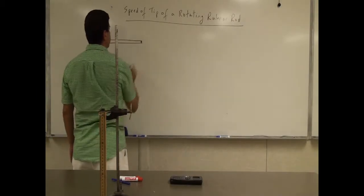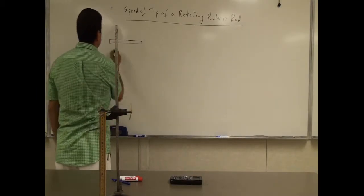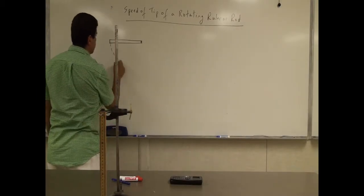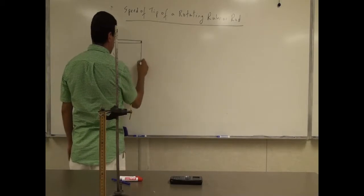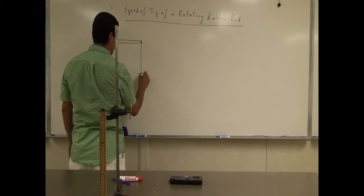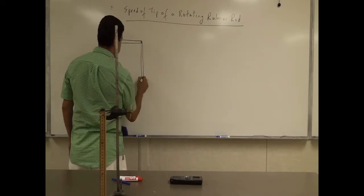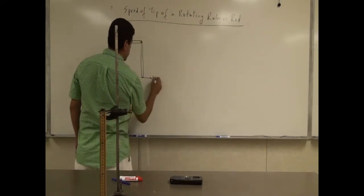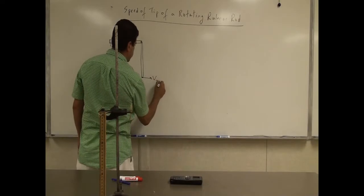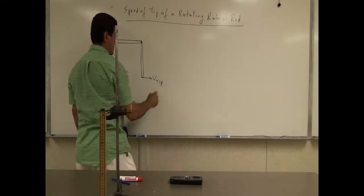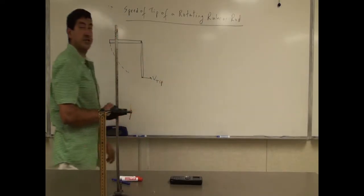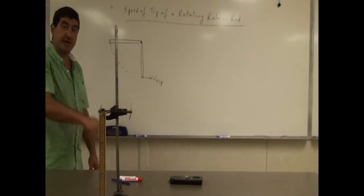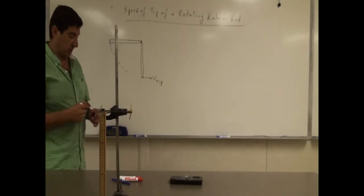It's pivoted about the end. I'm going to take this ruler and put it in its horizontal position. Then I'm going to ask: what is the speed — the tangential velocity of the tip of the ruler — going to be when the ruler is at the most bottom position?